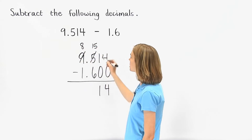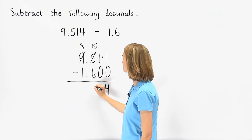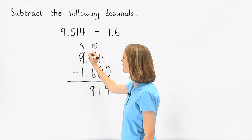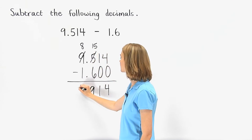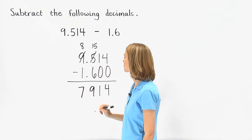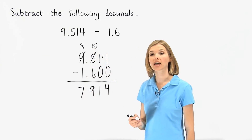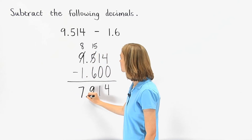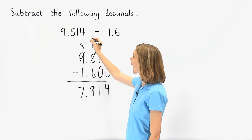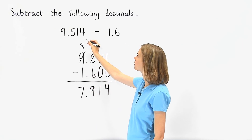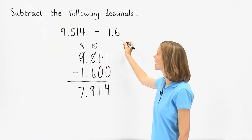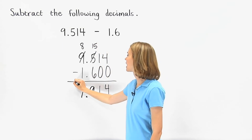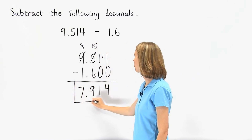Now we subtract fifteen minus six to get nine, and eight minus one is seven. Finally, we bring down the decimal point. So 9.514 minus 1.6 is 7.914.